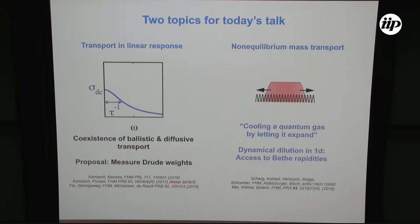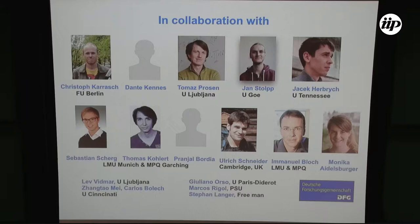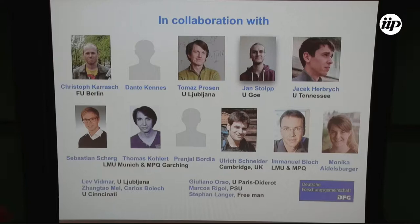The second part will be about experiments with ultracold atomic gases that already exist — experiments that don't probe transport in linear response, but far from equilibrium. The setup is that you place particles in some central region, remove the trapping potential, and let the whole cloud expand. There are fun aspects related to transient dynamics; you can even use that to cool a quantum gas by letting it expand. And if time permits, I'll talk about how this dynamical dilution process in 1D gives access to Bethe Ansatz rapidities in an actual experiment.